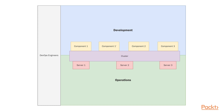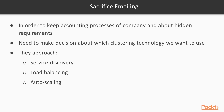Clusters are here to save us. Let's reshuffle the image. In this case, we've solved a few of our problems. Development and ops are now connected via a middleware that is the cluster. Components can be replicated without provisioning extra hardware. DevOps engineers are the glue between the two teams, making things happen at a fast pace. The stability of the full system does not depend on a single server, as the cluster is built in a way that can accept some level of failure by just degrading performance or taking down the less critical services. It is okay to sacrifice emailing in order to keep the accounting processes of the company running. Regarding the hidden requirements, this is where we need to make a decision about which clustering technology we want to use, as they approach service discovery, load balancing, and auto-scaling from different angles.